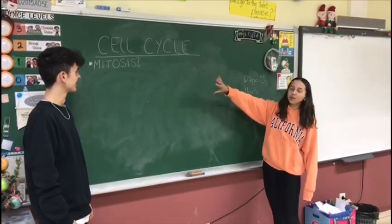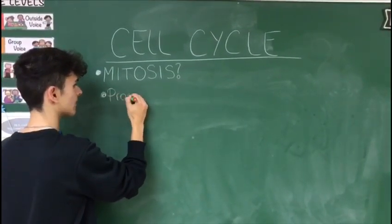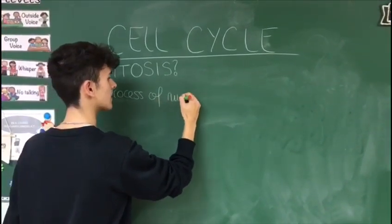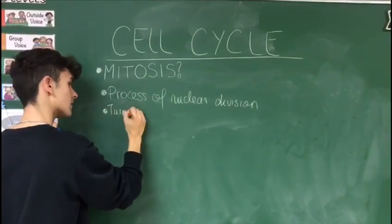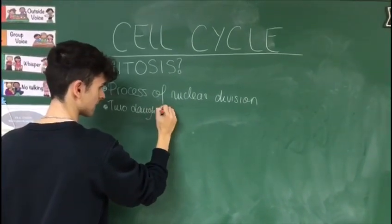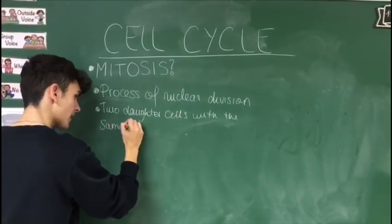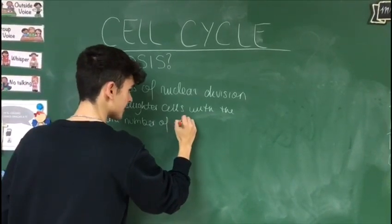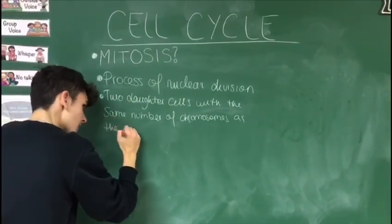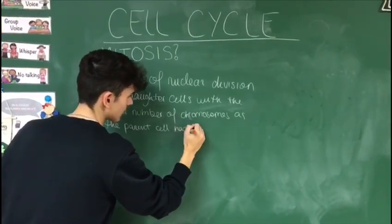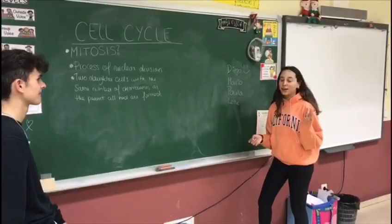Who can tell me what mitosis is? It is a process of nucleus division through which two daughter cells with the same number of chromosomes as the parent cell are formed. Well, Paula, you also have a positive.